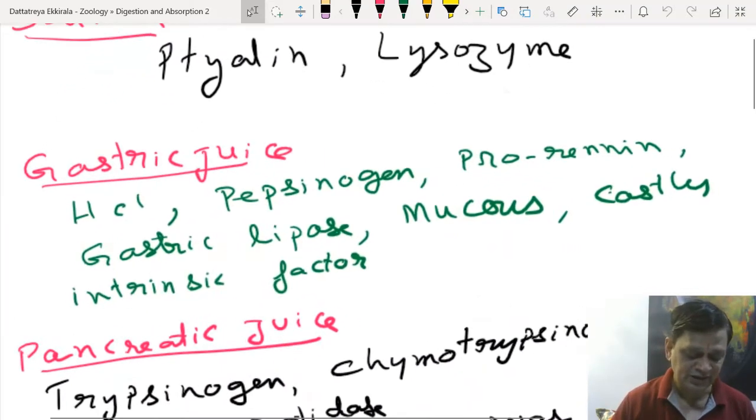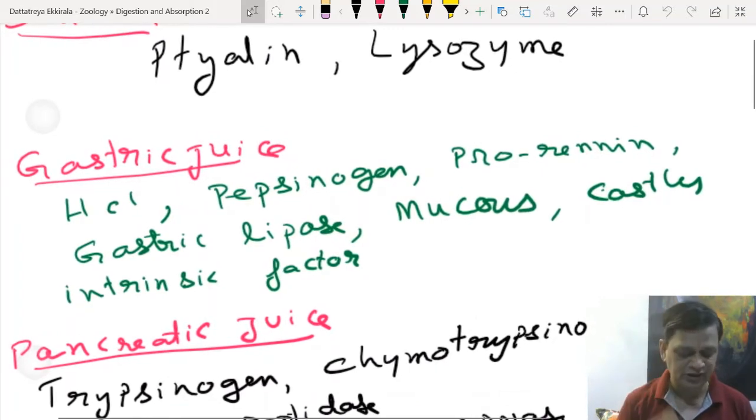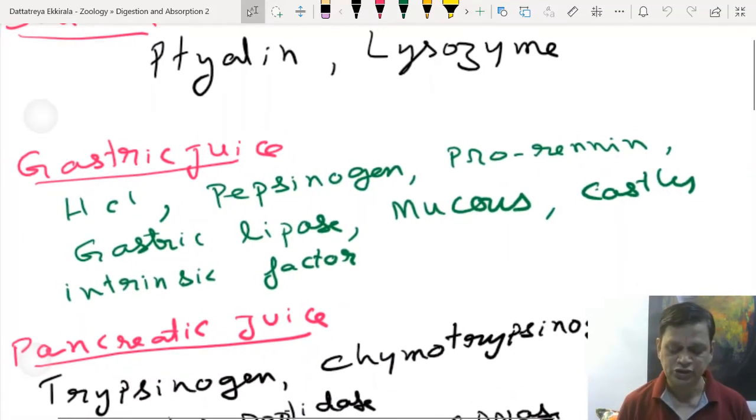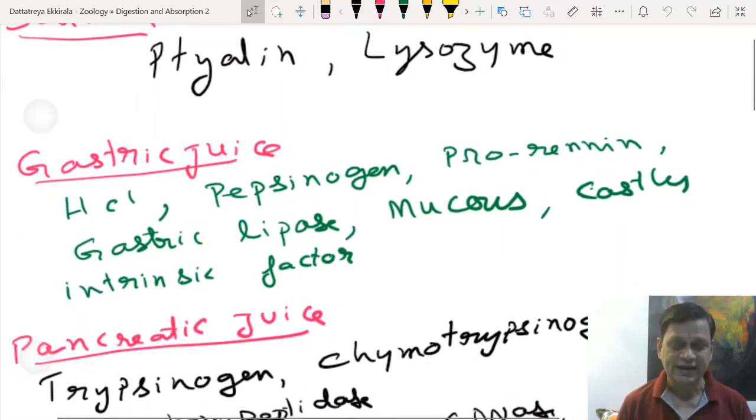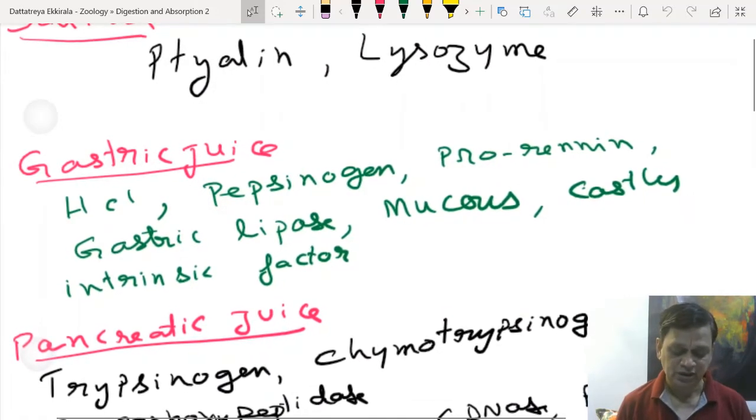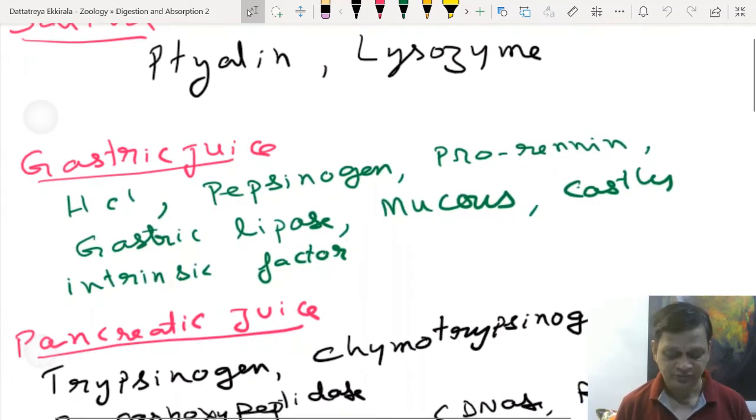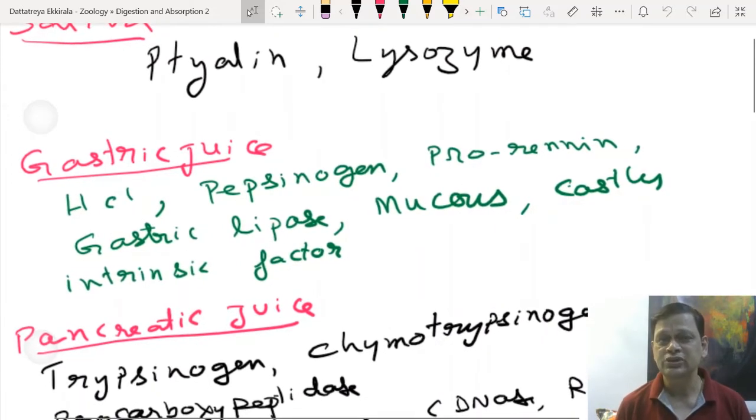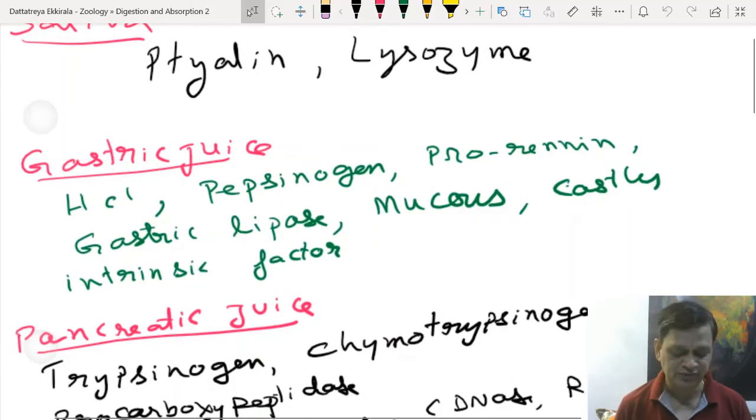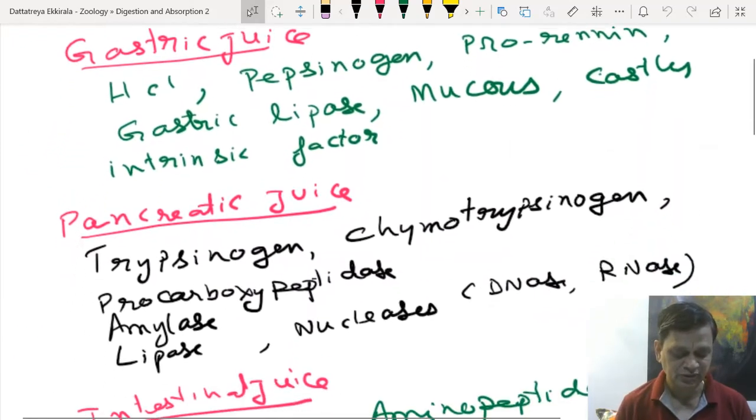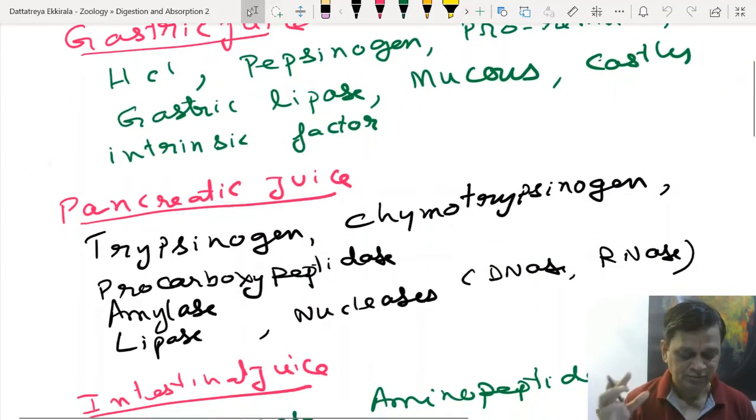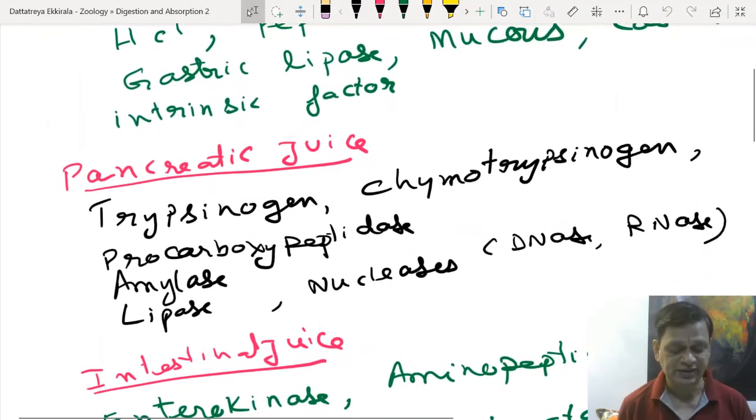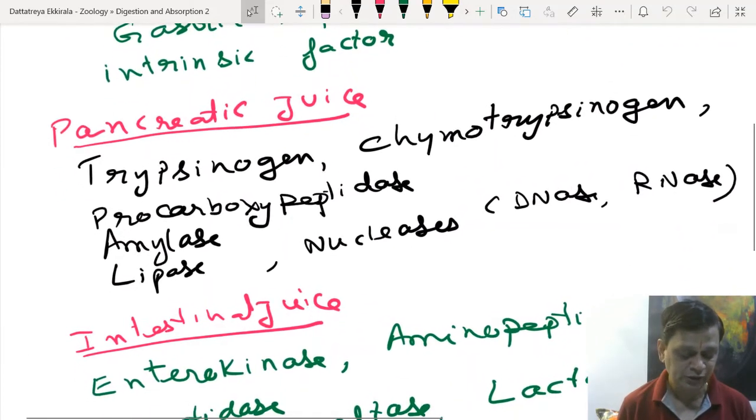Gastric juice components are HCl, pepsinogen, prorennin, gastric lipase, mucus, and intrinsic factor that helps in absorption of B12, which is very important for normal functioning of nervous system and maturation of RBC. Gastric juice is acidic, pH less than 2.